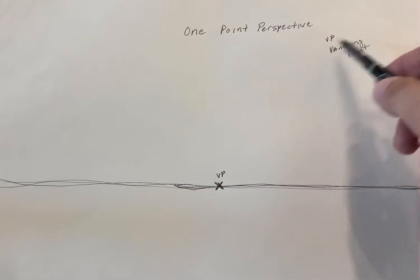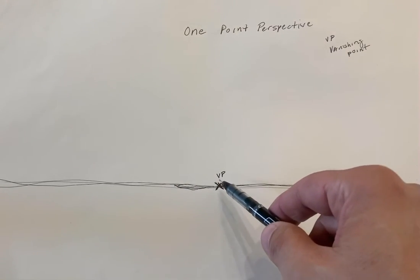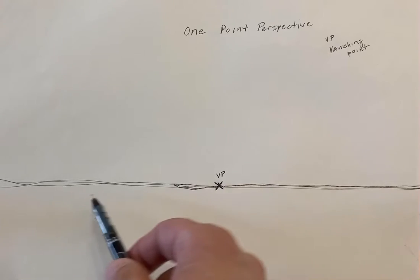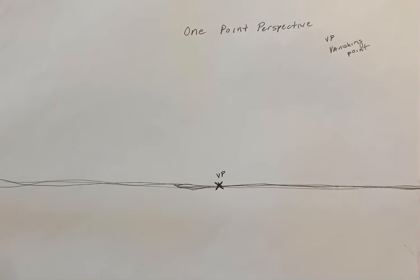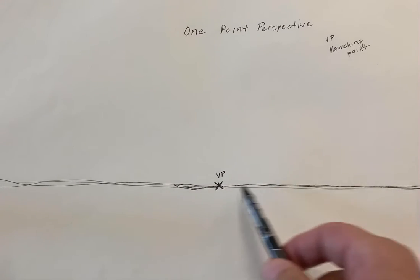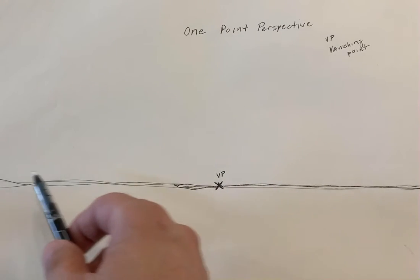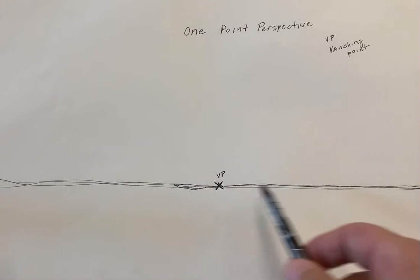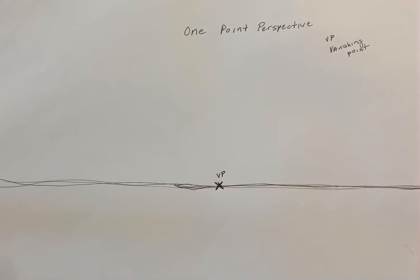It will have a single vanishing point. The vanishing point is here — it is located on the horizon line, which could also be considered your eye level.